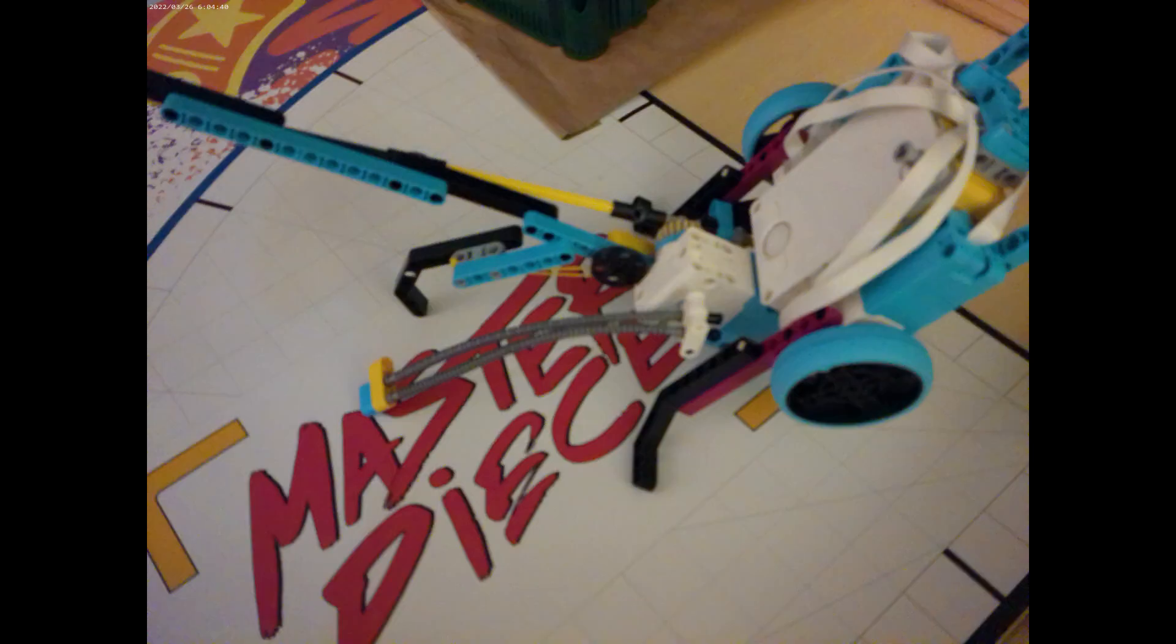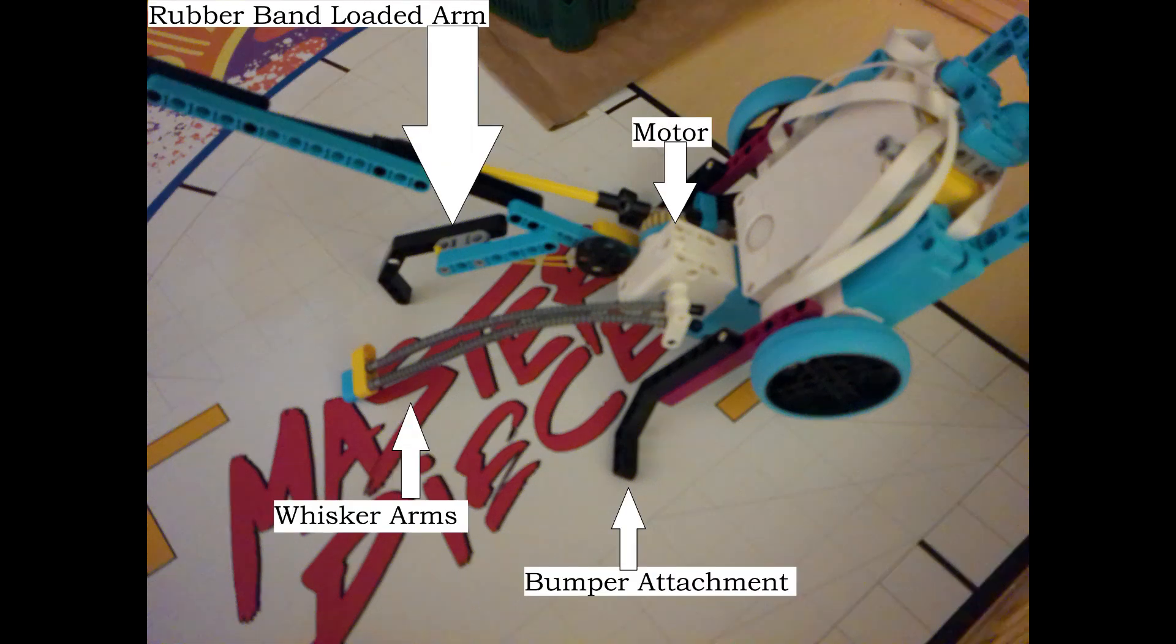So here's the view of the robot on its side. The robot is balancing on three points, the motor, and the two front bumper pieces.